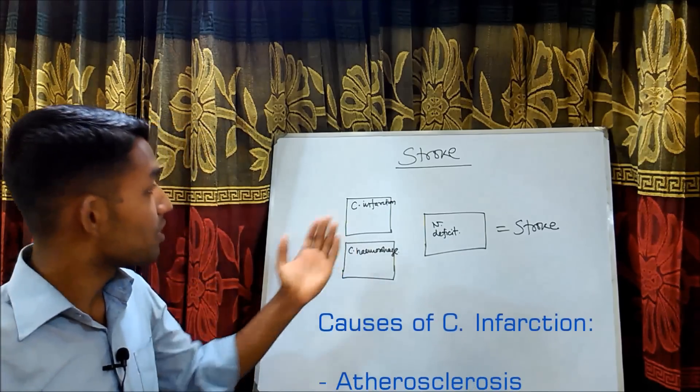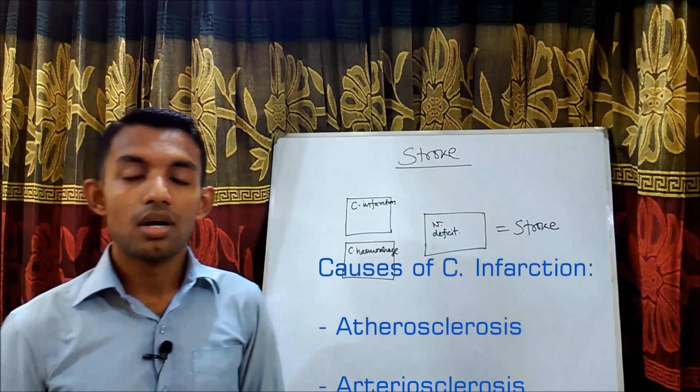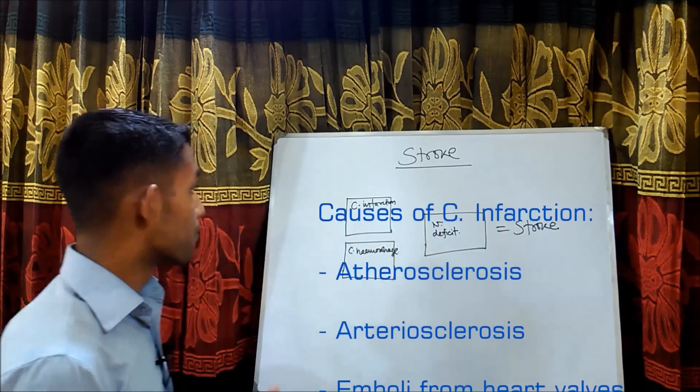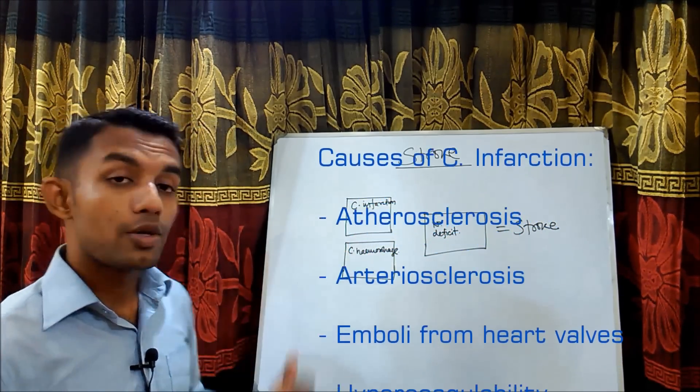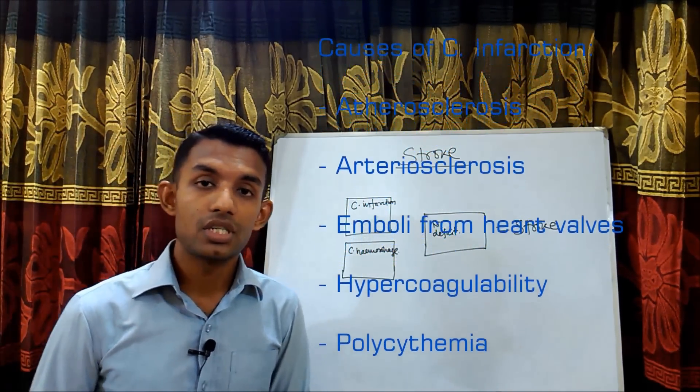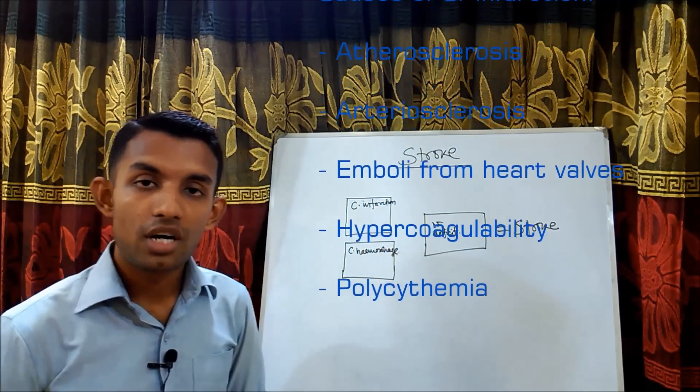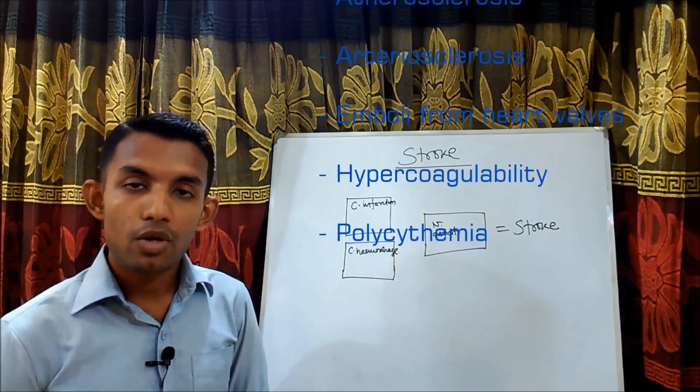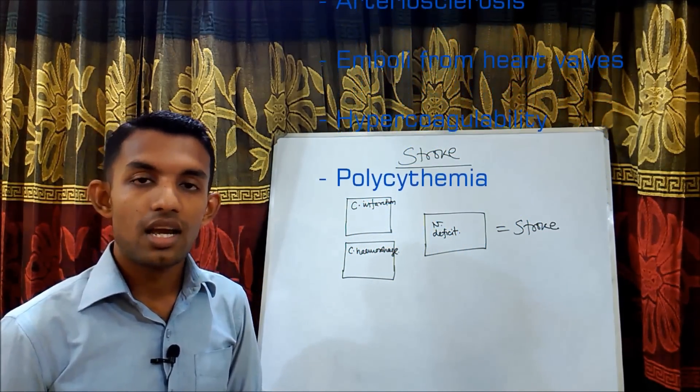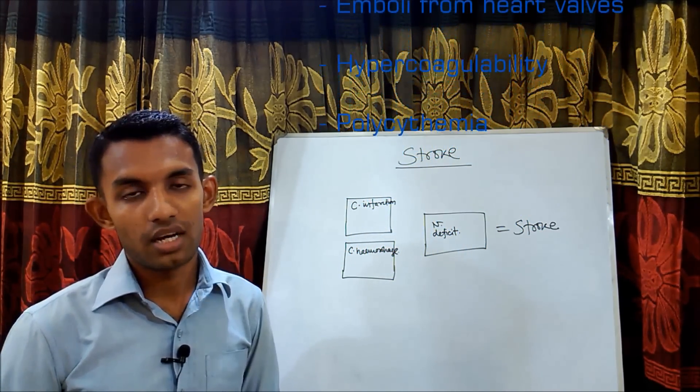Cerebral infarction may be due to atherosclerosis, arteriosclerosis, emboli from the heart valve, hypercoagulability, and polycythemia.